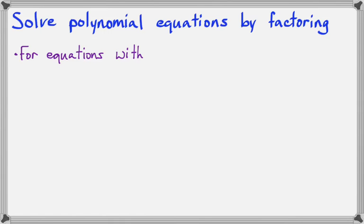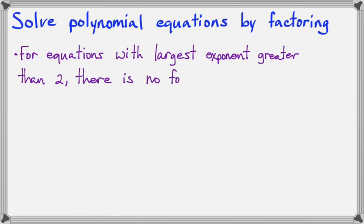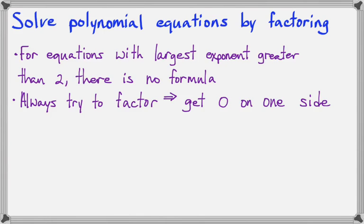For equations where the largest exponent is greater than 2, there's not a formula. We don't have a catch-all or one-size-fits-all way to find our solution. For right now, we're going to try to factor these. That's the only way we're going to have to solve them. Factoring is going to mean we're going to have to get 0 on one side of the equal mark. So let's look at this example.